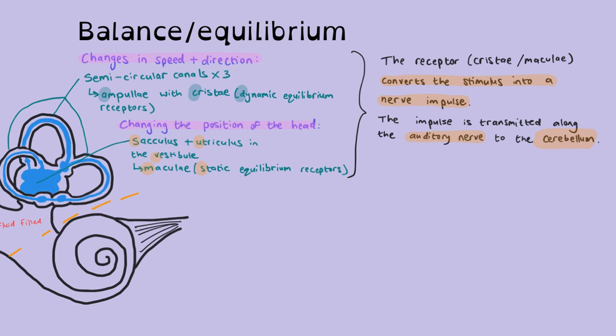And the last mark, because often the question asks, explain how balance is restored. So you've got to say this last point, very important. The cerebellum sends impulses to your skeletal muscles, not just muscles, what muscles? Cardiac? I don't know. But to your skeletal muscles to restore balance.